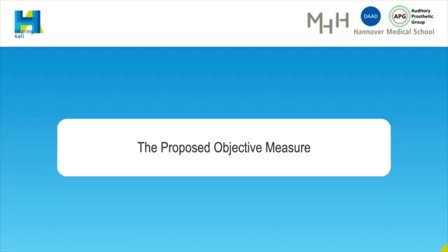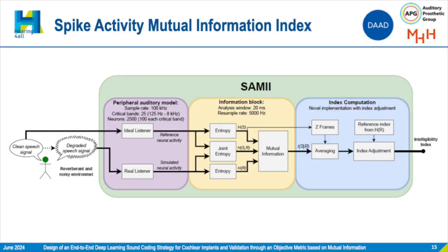Hello, my name is Franklin Alvarez. I am also a PhD student in the APG Group at the Hanover Medical School, and I would like to talk about the proposed objective measure used to test DeepACE performance compared to the regular ACE sound-coding strategy. SAMI stands for SPAC Activity Mutual Information Index, and it's an intrusive objective measure that computes the mutual information between a clean speech neural signal and a degraded neural signal to obtain the intelligibility index.